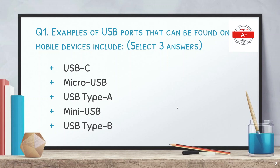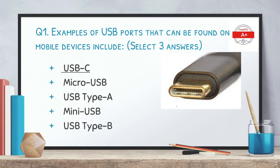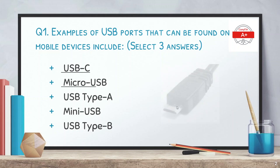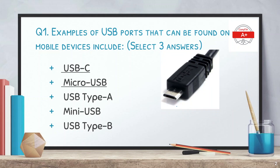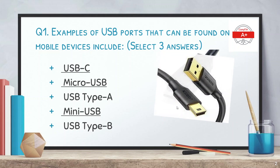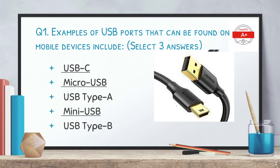The answers are USB Type C, Micro USB, and Mini USB. USB-C is the latest and most modern connector type seen in smartphones. Micro USB is a little older and Mini USB is the oldest of all these.